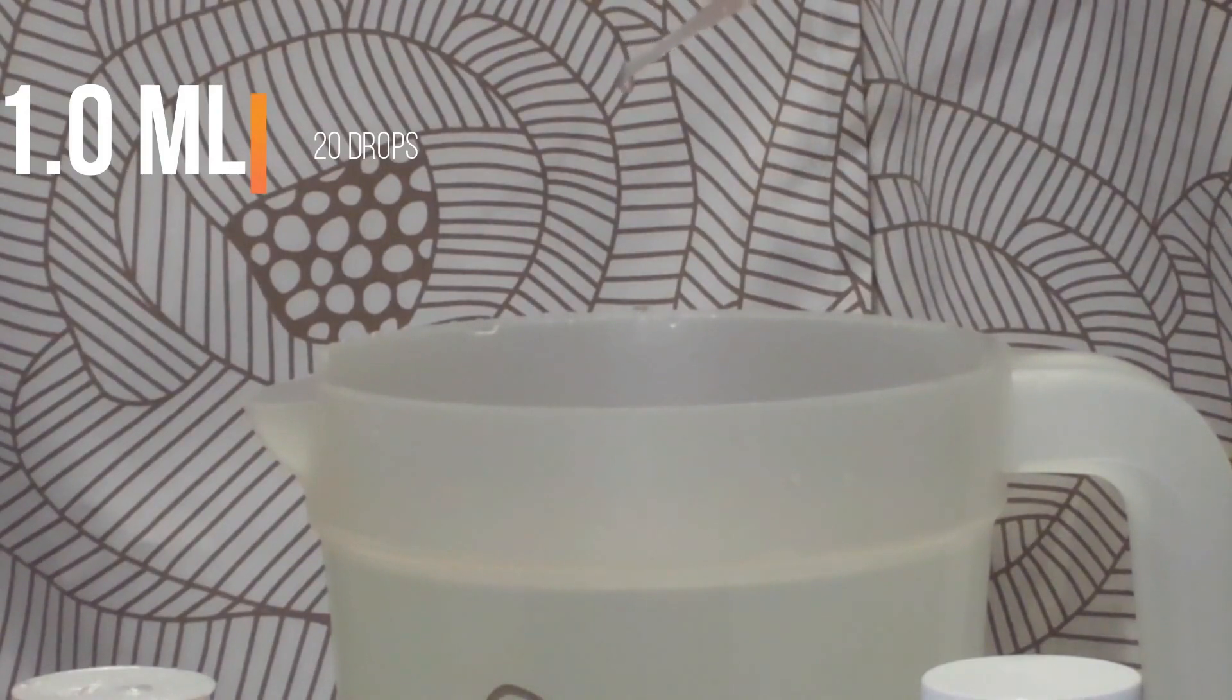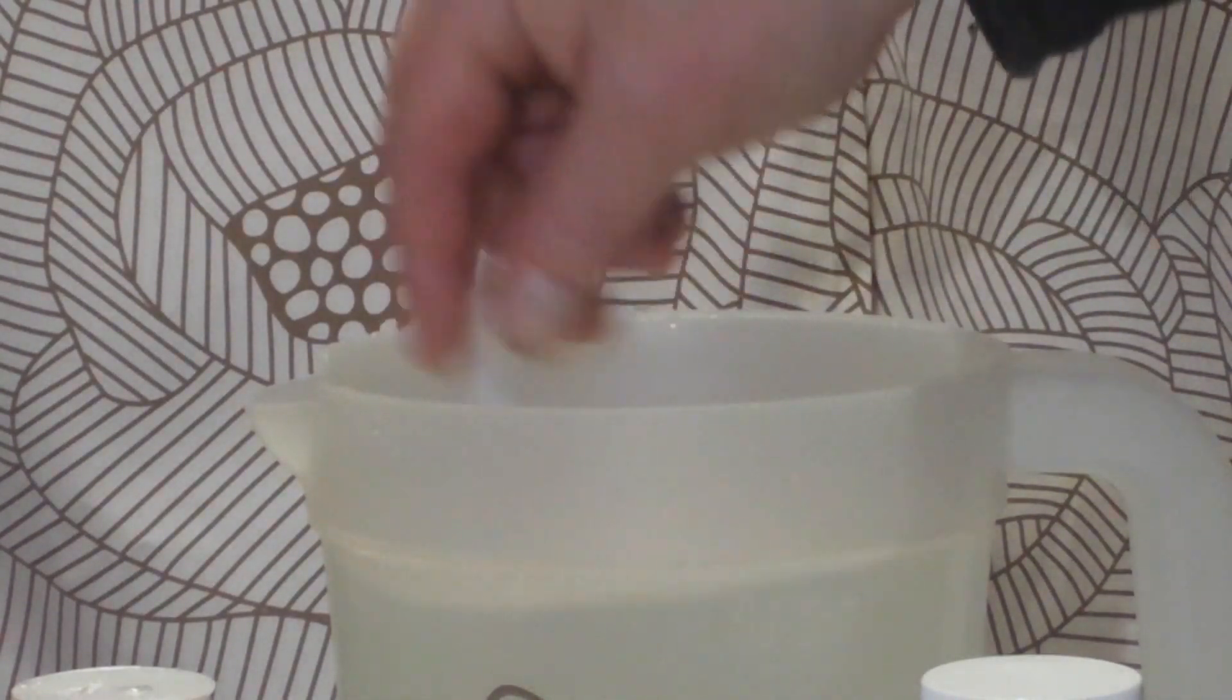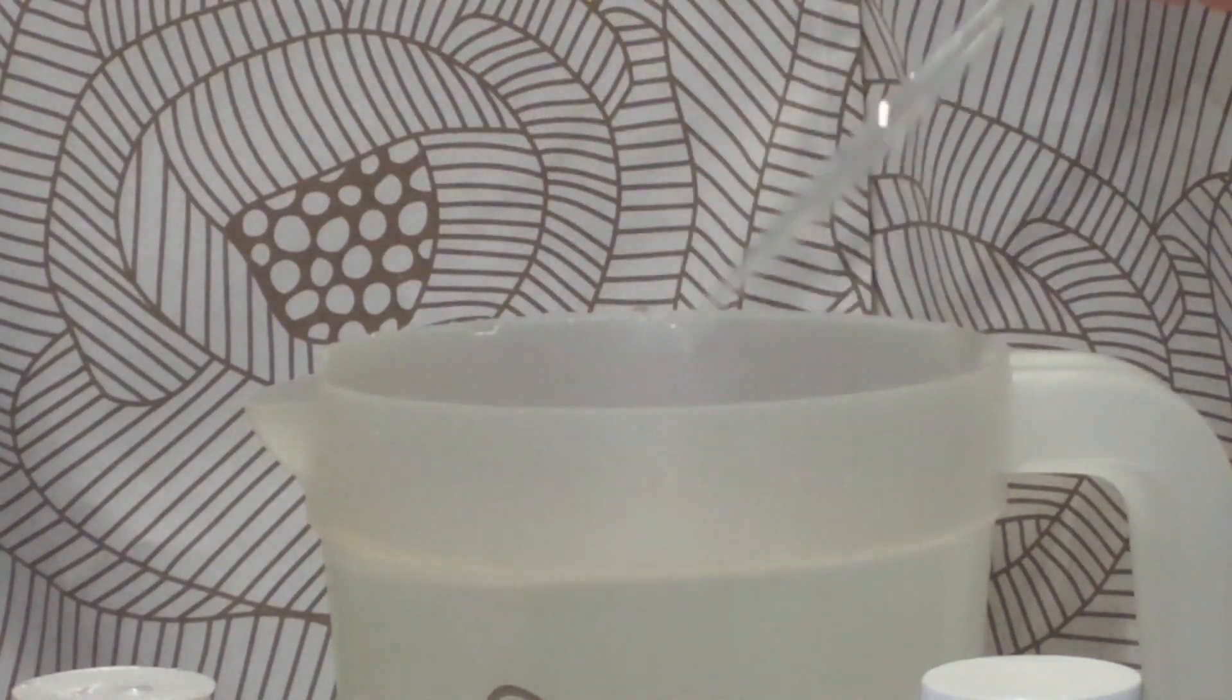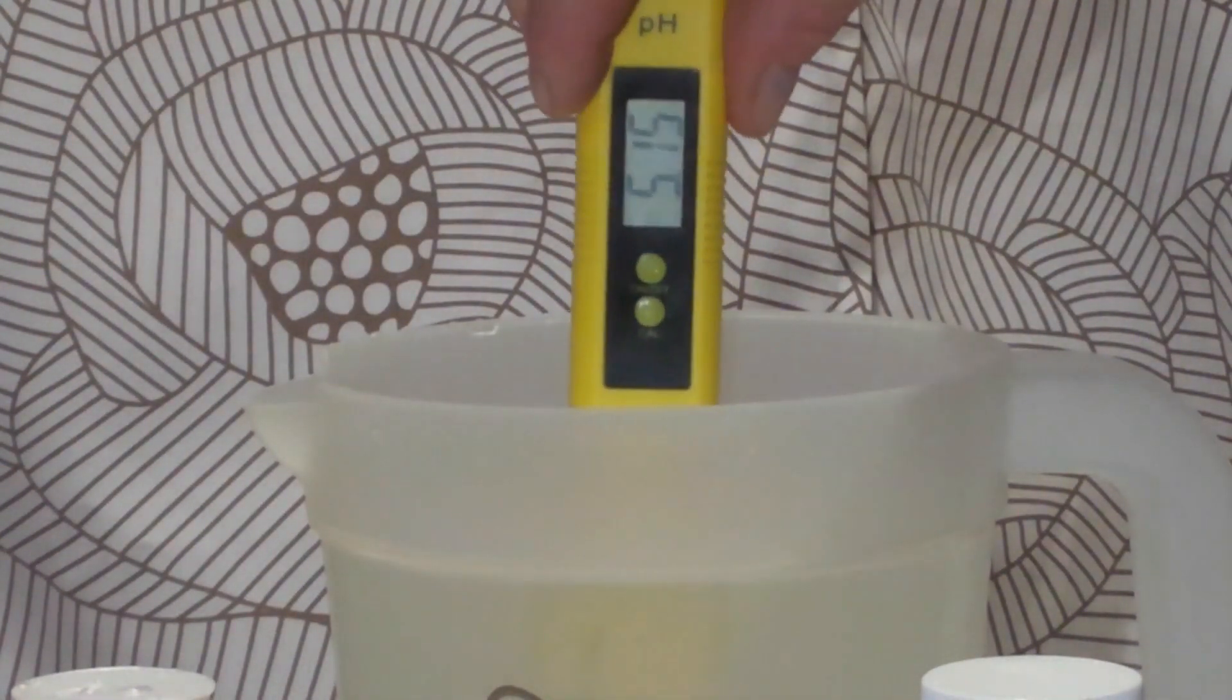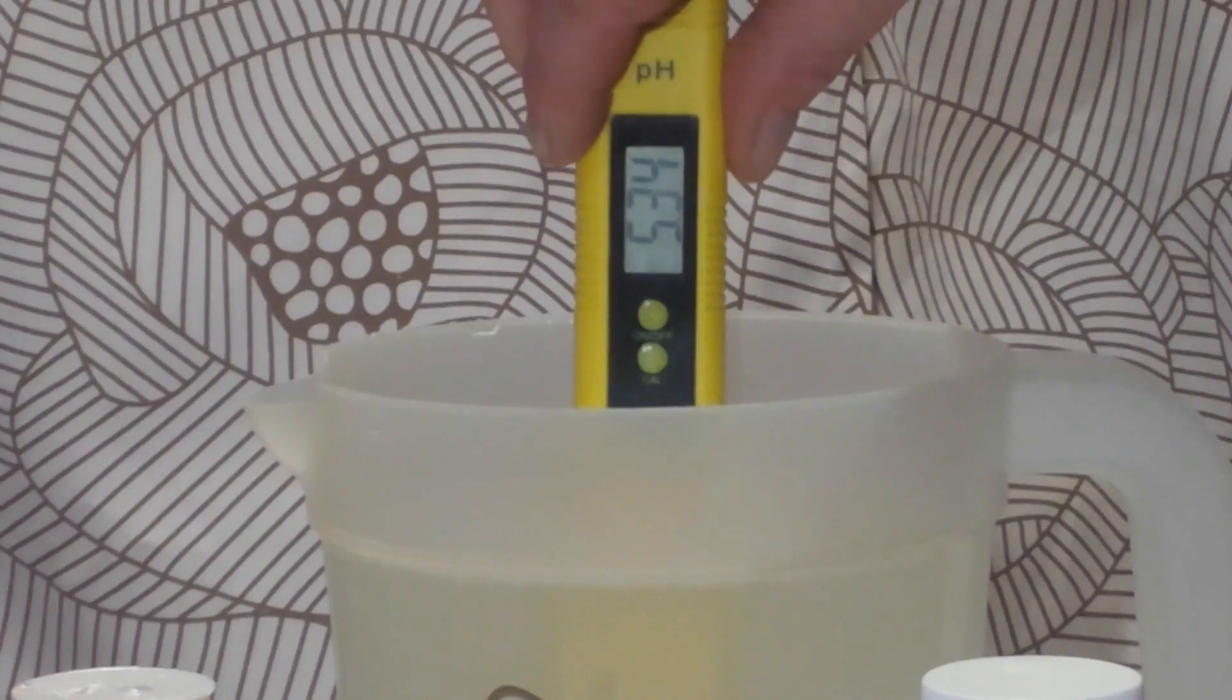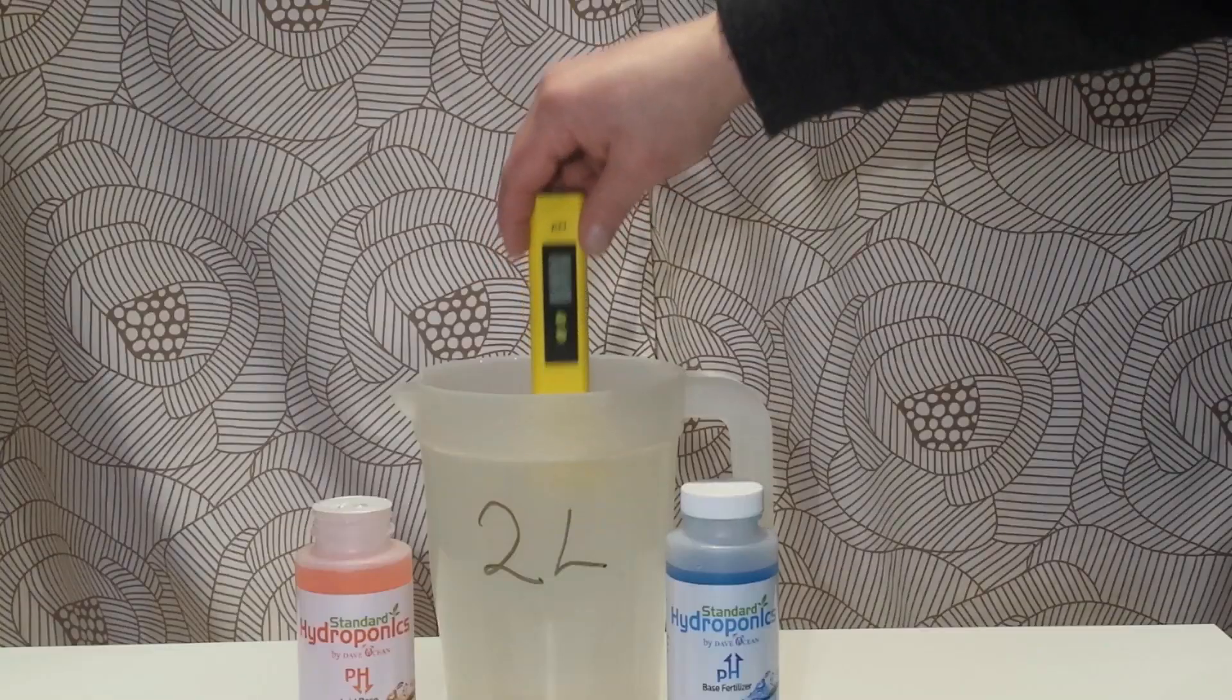Typically, if your water is a lot harder, like an 8.4, you're going to probably use about 1.5 mils. Now let's stir this up. What do we get? 5.44 pH. That's not that bad. We dropped 1.5.